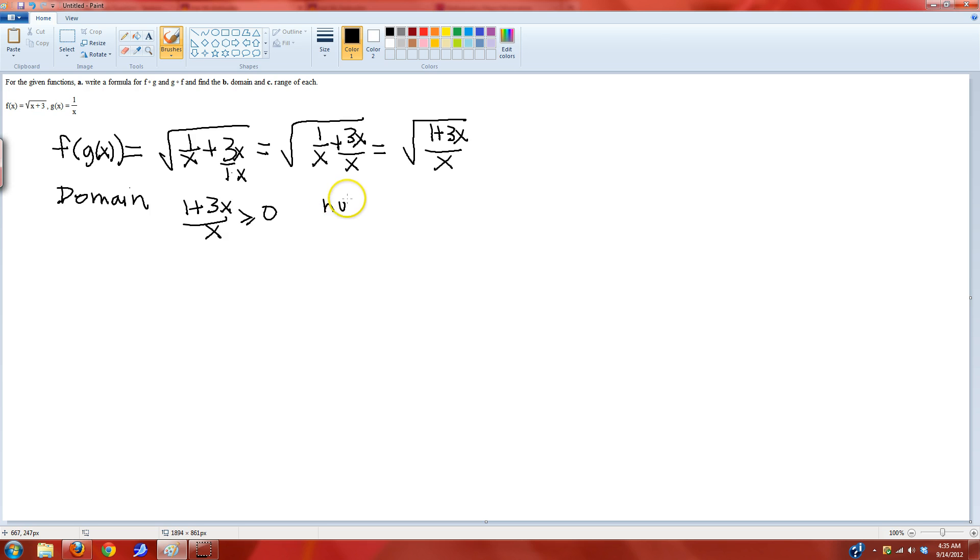Let's look at the numerator. 1 plus 3x. When is it 0? It's 0 when x is negative 1 third. When is it positive? When is it negative? You plug in something smaller than negative 1 third, and it'll be negative. You plug in something bigger than negative 1 third, and it'll be positive. So that's the sign analysis on that part.